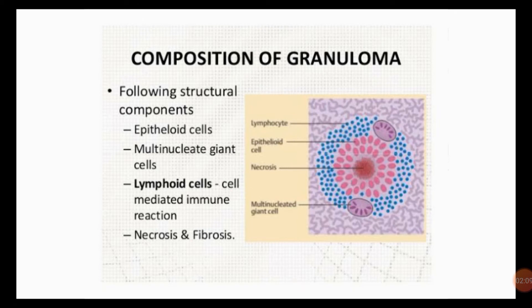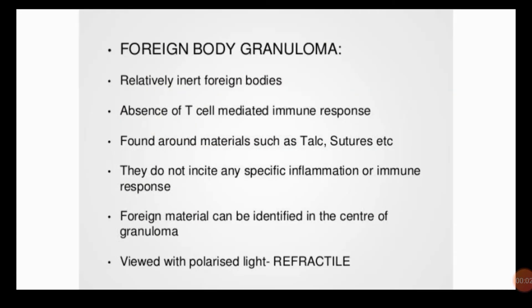Now we see the components of the granuloma. In the figure, you can see that there is a central area of necrosis with a collar of epithelioid cells and an outer collar of lymphocytes. Multi-nucleated giant cells are also present, and you can see multiple nuclei in these cells.